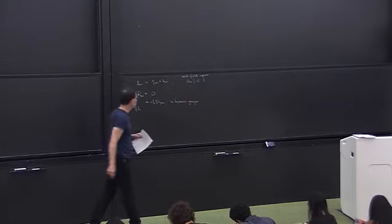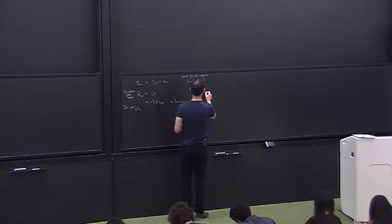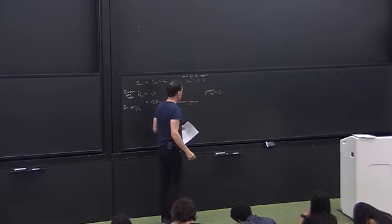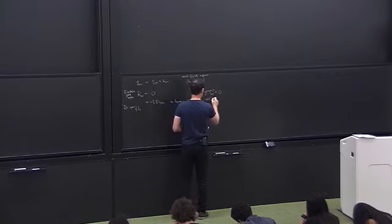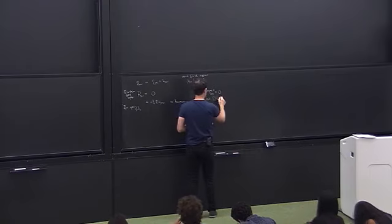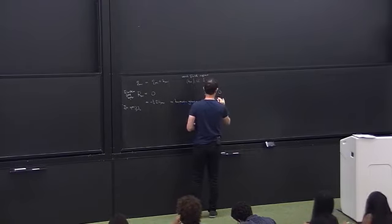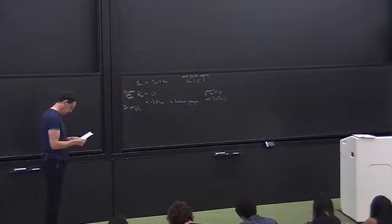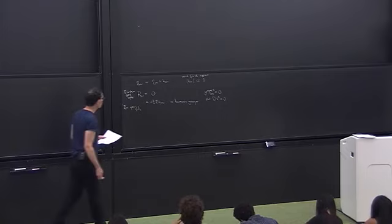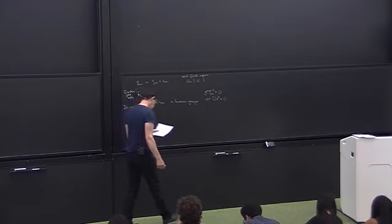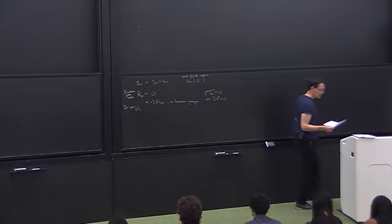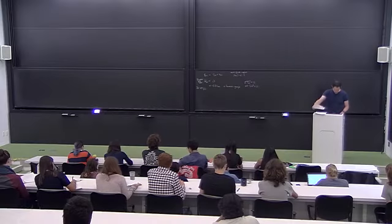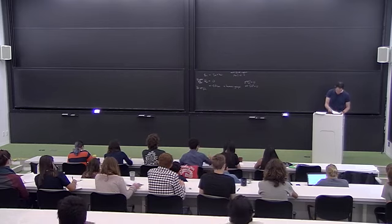We discussed two ways of writing harmonic gauge. One way was g mu nu gamma mu nu lambda equals zero, and this is equivalent to box of x lambda equals zero. In this lecture, we're going to discuss these gravitational waves a little bit more and understand their two polarizations.